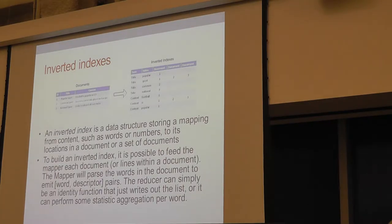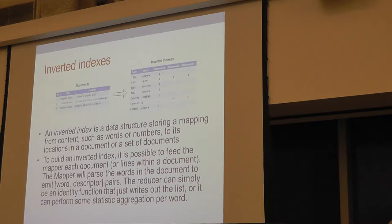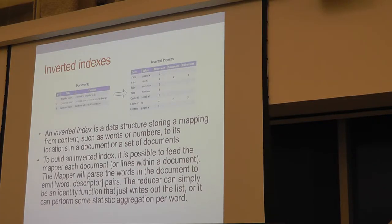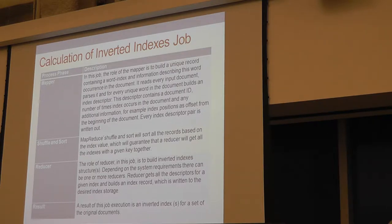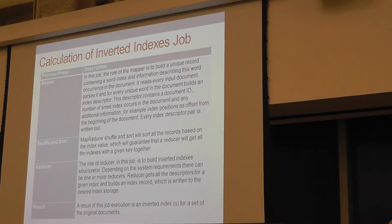Let's start with the simple example of inverted indices. Everyone who has tried to do search should be familiar with inverted indices. You have a mapper that reads every line of the document and spits out a record for every word. Then shuffle and sort brings the same words together, and the reducer is a simple identity reducer — and you have your inverted index.